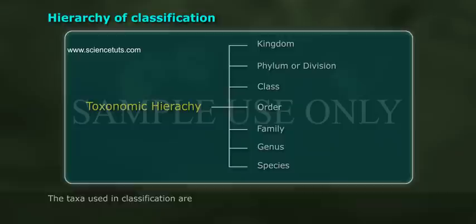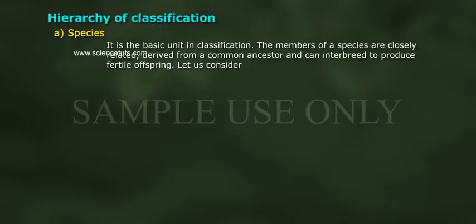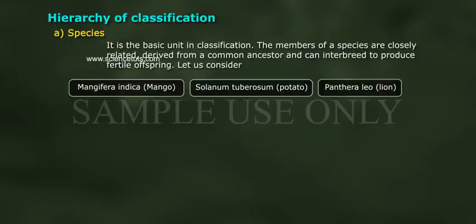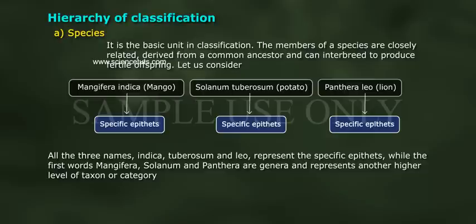Species is a basic unit in classification. The members of a species are closely related, derived from a common ancestor and can interbreed to produce fertile offspring. For example, Mangifera indica and Panthera leo (Lion). The names indica, tuberosum and leo represent the specific epithets.